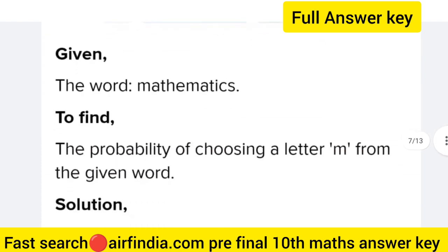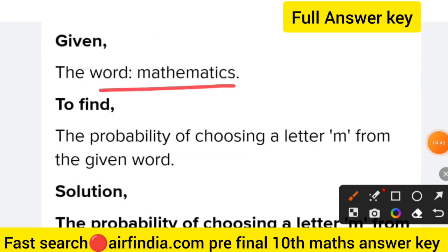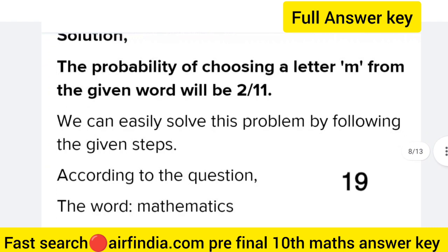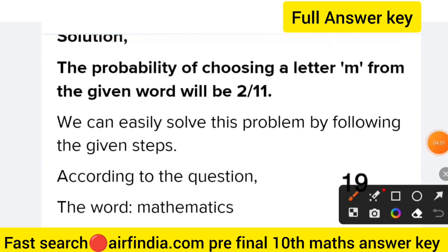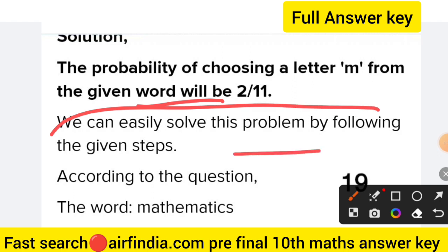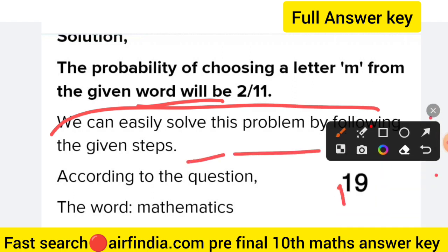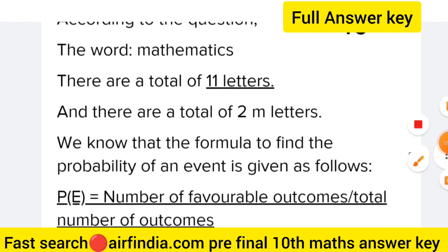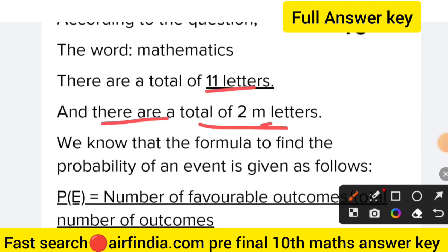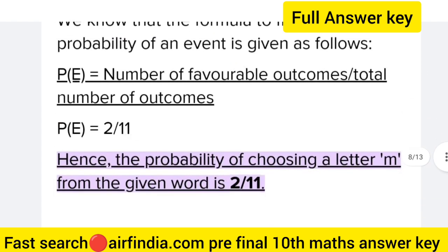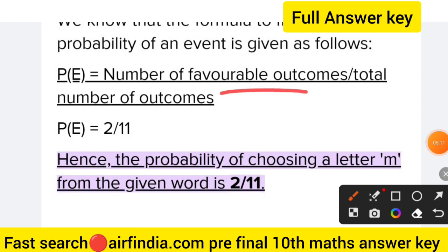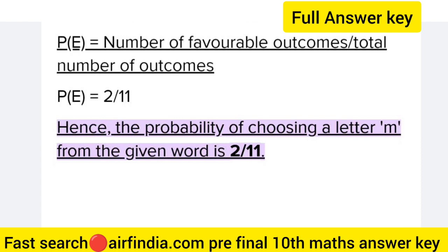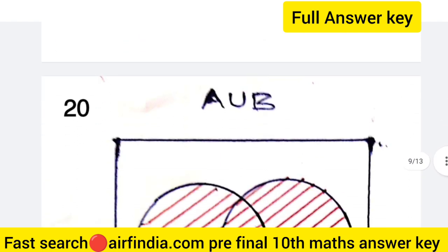Question 19: find the probability of the letter M in the word MATHEMATICS. According to the question, the word MATHEMATICS has a total of 11 letters and there are 2 M's. The formula to find the probability of an event is P equals number of favorable outcomes upon total number of outcomes. So P equals 2/11. The probability of choosing letter M is 2/11.